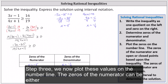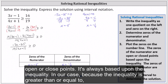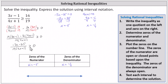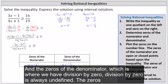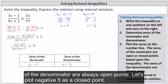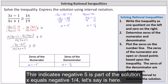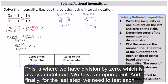Step three: we now plot these values on the number line. The zeros of the numerator can be either open or closed points based upon the inequality. Because the inequality is greater than or equal to, the zero of the numerator is a closed point. The zeros of the denominator, where we have division by zero, are always open points. So we plot negative five as a closed point — at negative five the fraction equals zero and the inequality is satisfied, so negative five is part of the solution. We plot x = -1/4 as an open point since division by zero is always undefined.